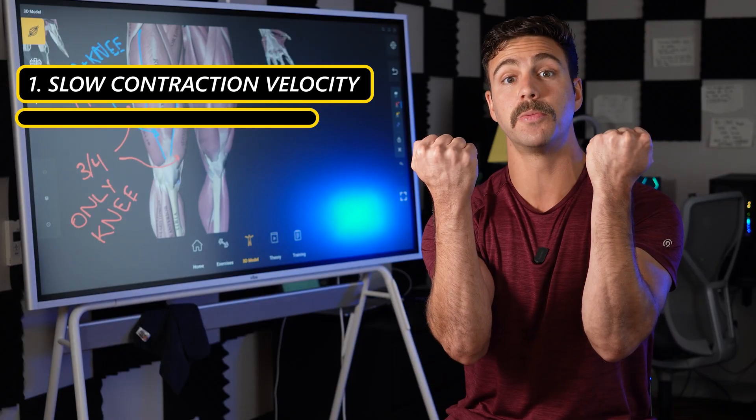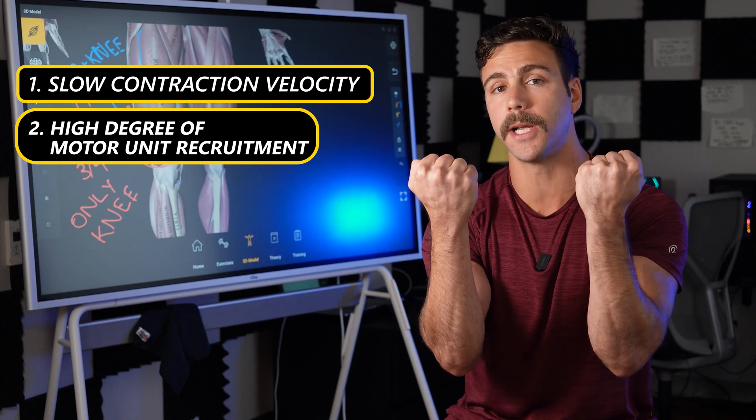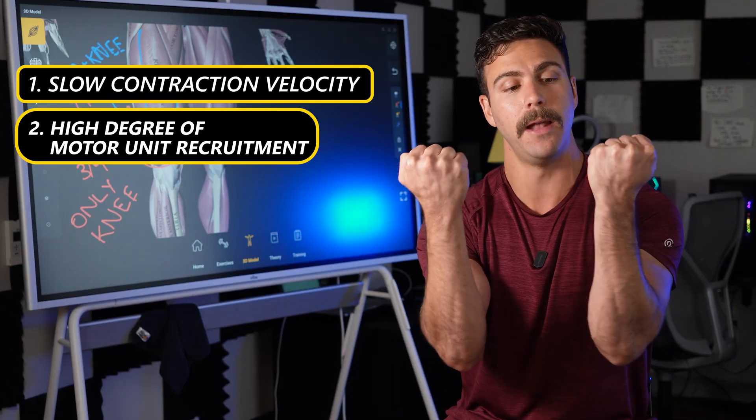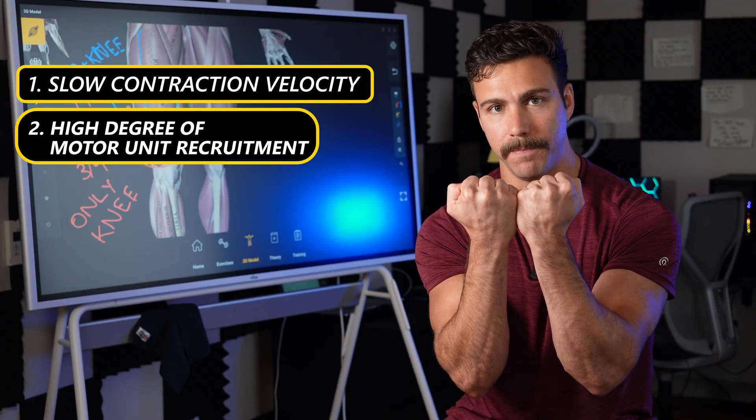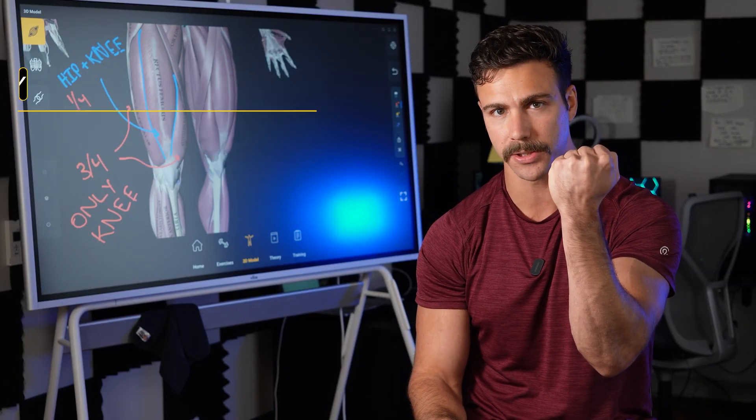Number two is we have a high degree of motor unit recruitment, which means a large percentage of the muscle fibers in the target muscle are activated. And both of these need to happen at the same time. So let's break these concepts down one by one, starting with contraction velocity.